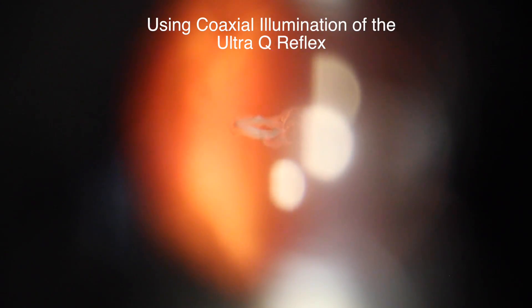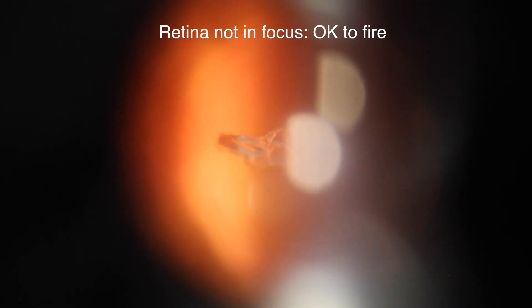We are able to visualize the lens all the way to the retina to give ourselves spatial context. In this case, we see the large Weiss ring in the middle of the vitreous and the retina not being in focus, thus allowing us to feel comfortable firing the laser.